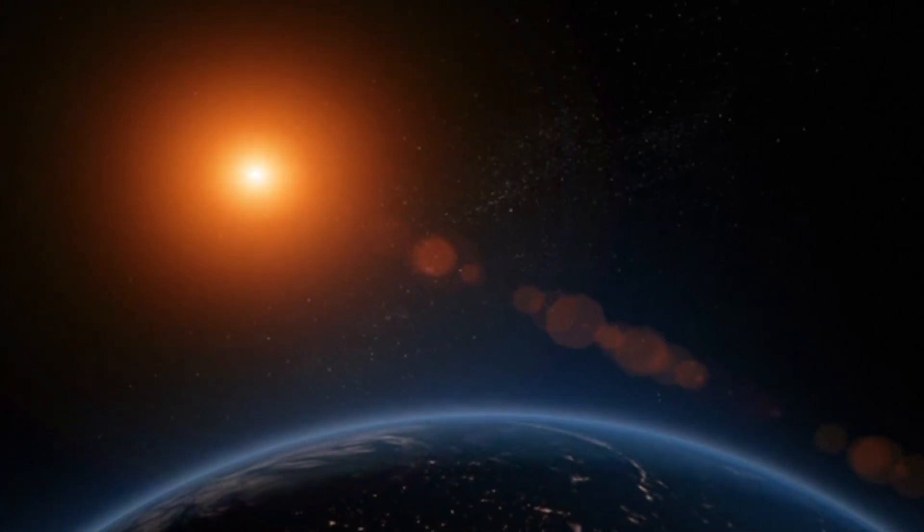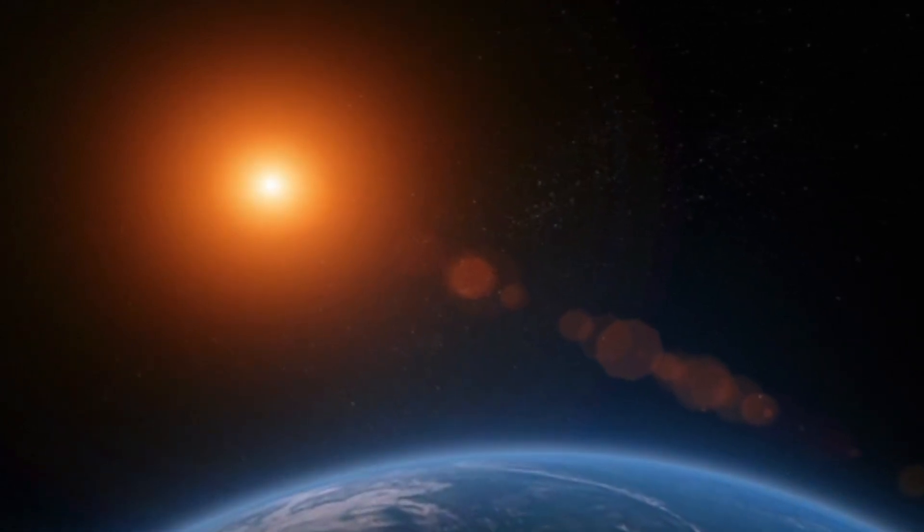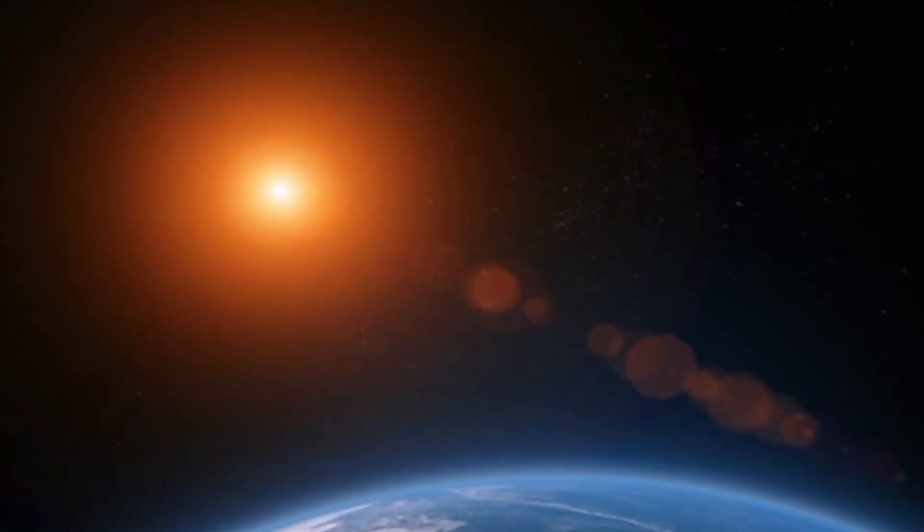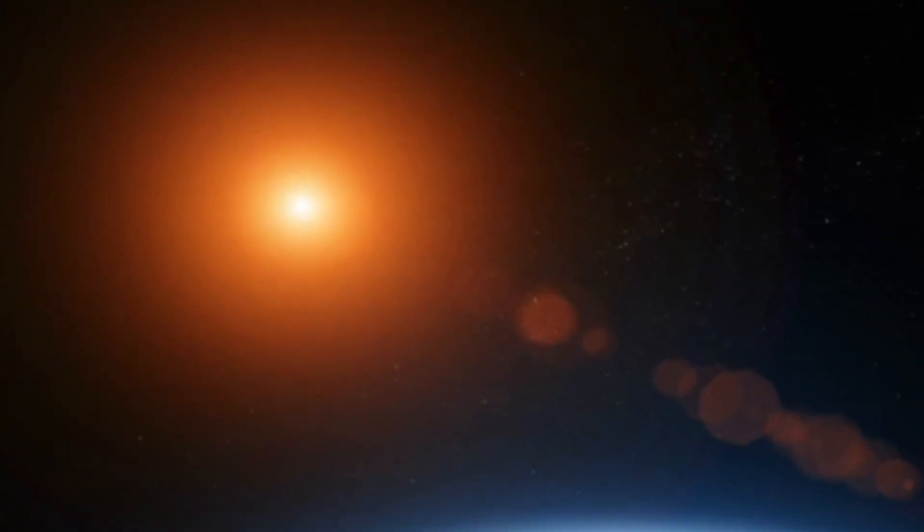The recent announcement of the clearest image of Proxima b ever seen has fueled curiosity about this distant world and its possible secrets. Proxima b, located about 25 light-years from Earth, orbits the closest star system to ours after the Sun, Proxima Centauri.